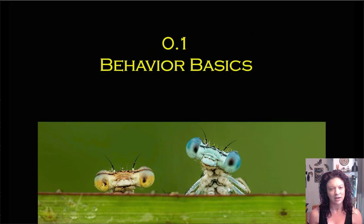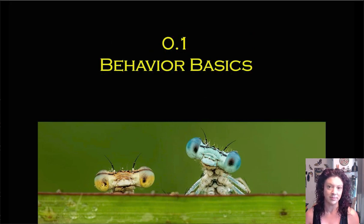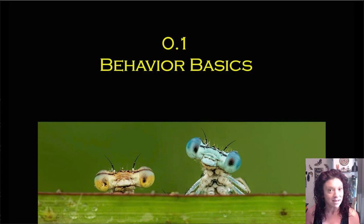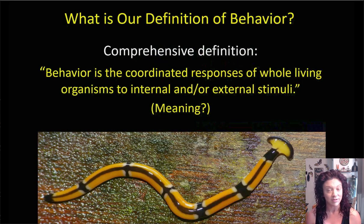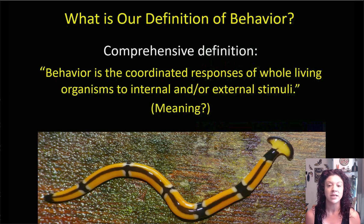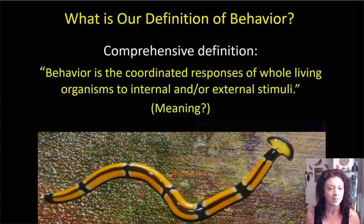Before we can get into any great detailed discussion about the types of behaviors animals exhibit, we have to have some comprehensive definitions about what we mean when we use the word behavior. The best working definition we have as animal behaviorists is this: behavior is the coordinated responses of whole living organisms to either internal or external stimuli, or sometimes a combination of both.